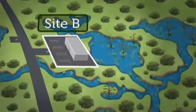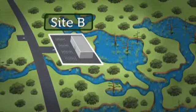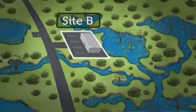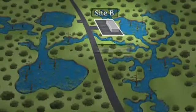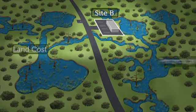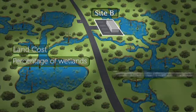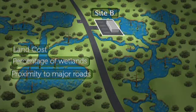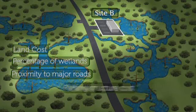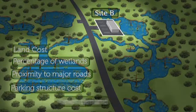In this example, the criteria used to determine the practicality of alternatives included land cost, percentage of wetlands, proximity to major roads, parking structure cost, and market demand.